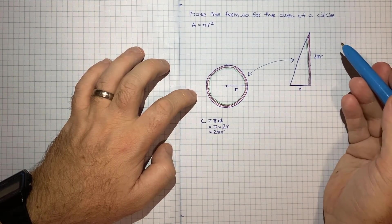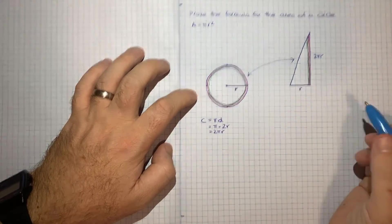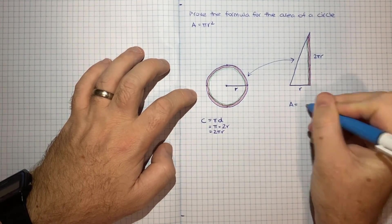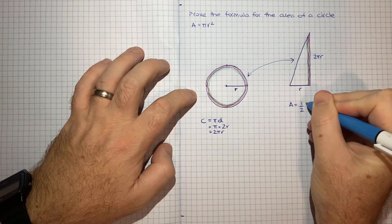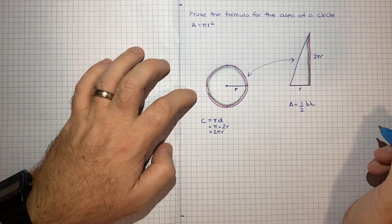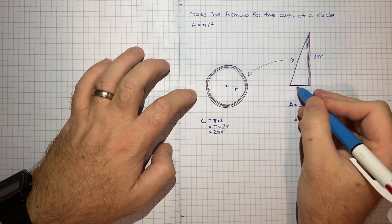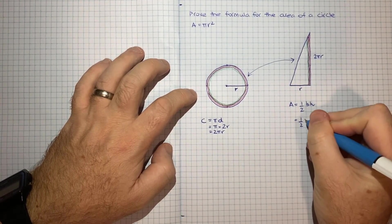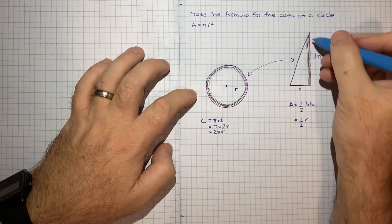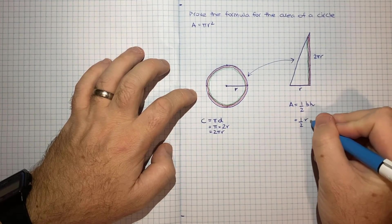And so from there we can take the formula for the area of a triangle and get to this result. So we know the area of a triangle is equal to half times the base times the height of the triangle. And so that's going to be half times, in this case, the base is the radius and the height is 2 pi r.